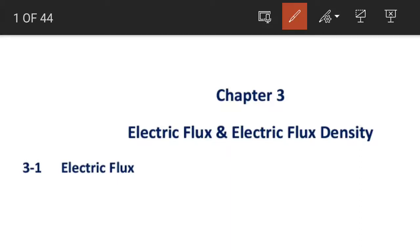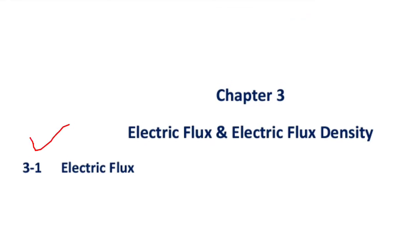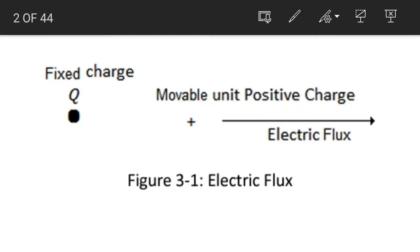We are going to start chapter number 3. Chapter number 3 is related to electric flux and electric flux density. Electric flux is a scalar quantity, represented by psi, and the unit of this scalar quantity is coulomb.